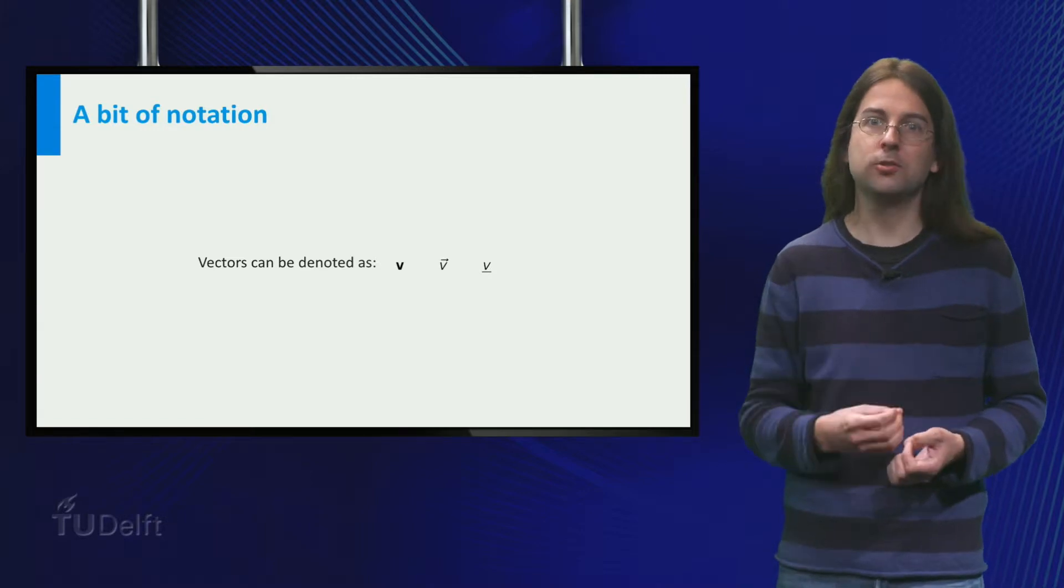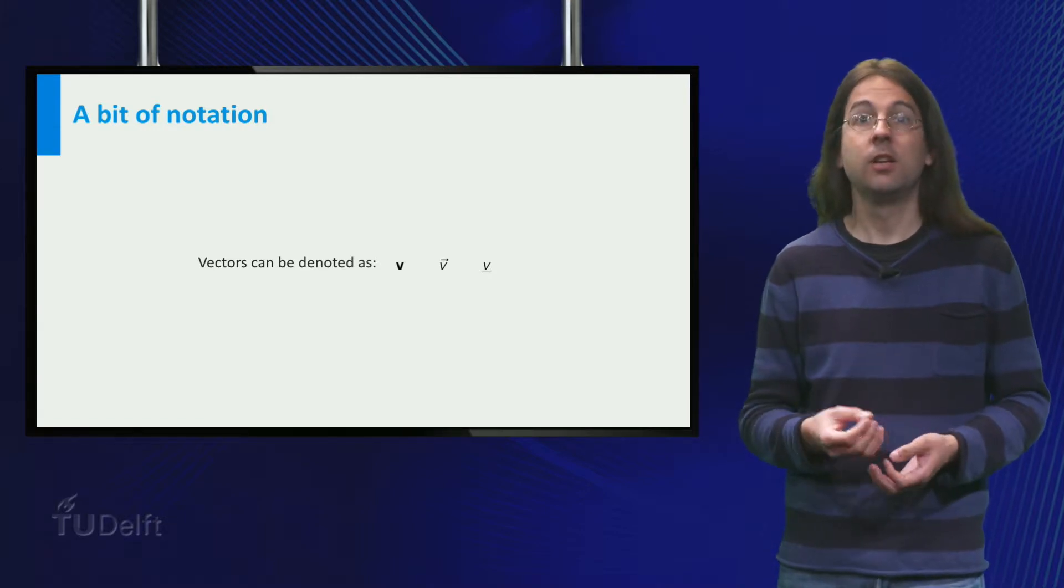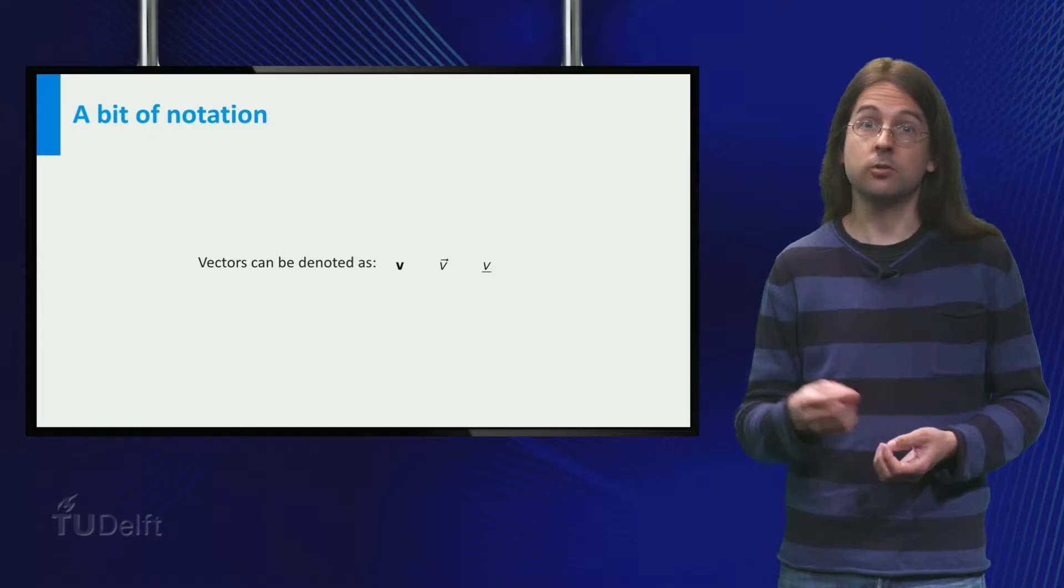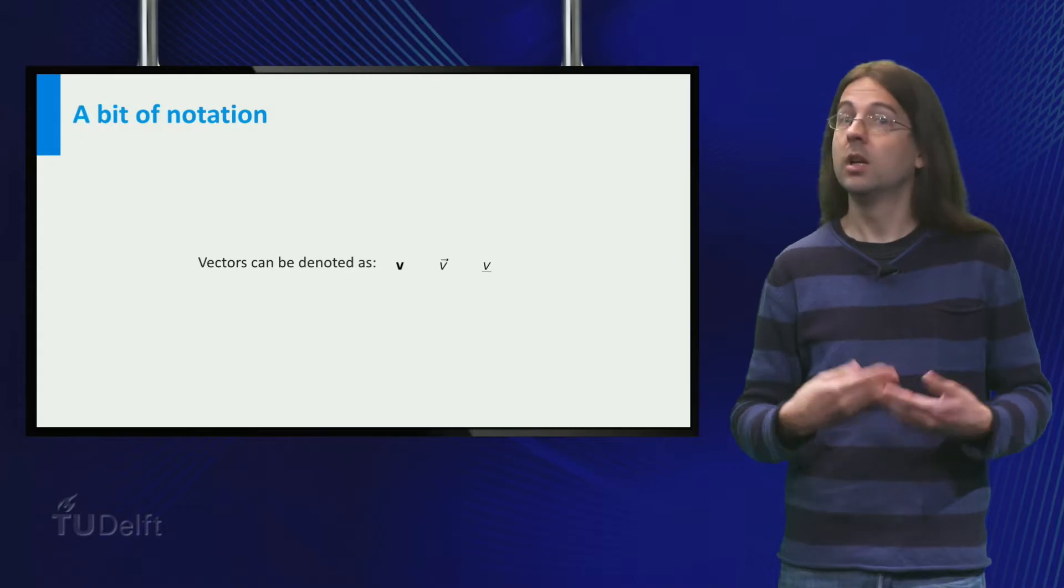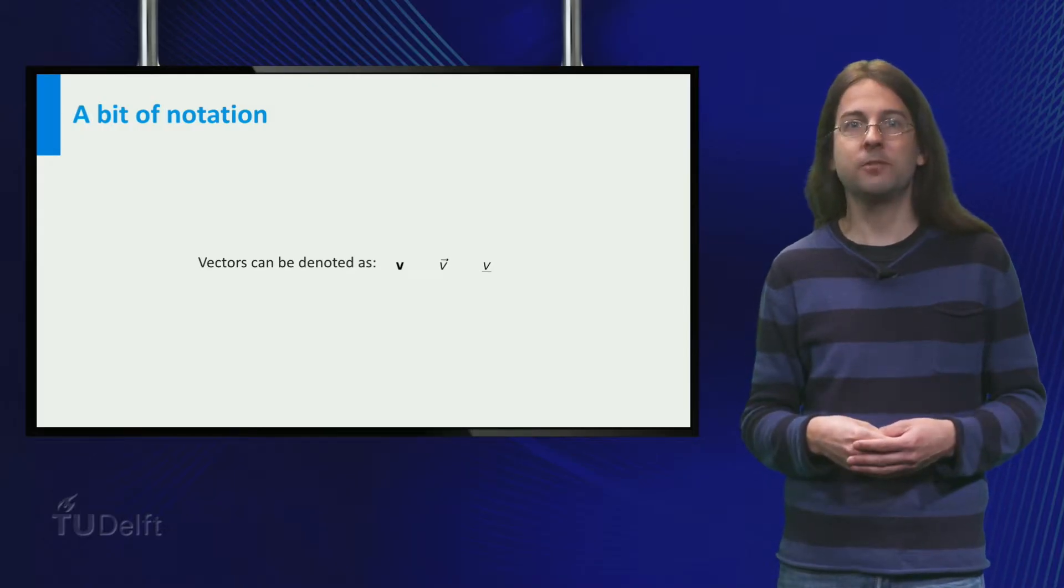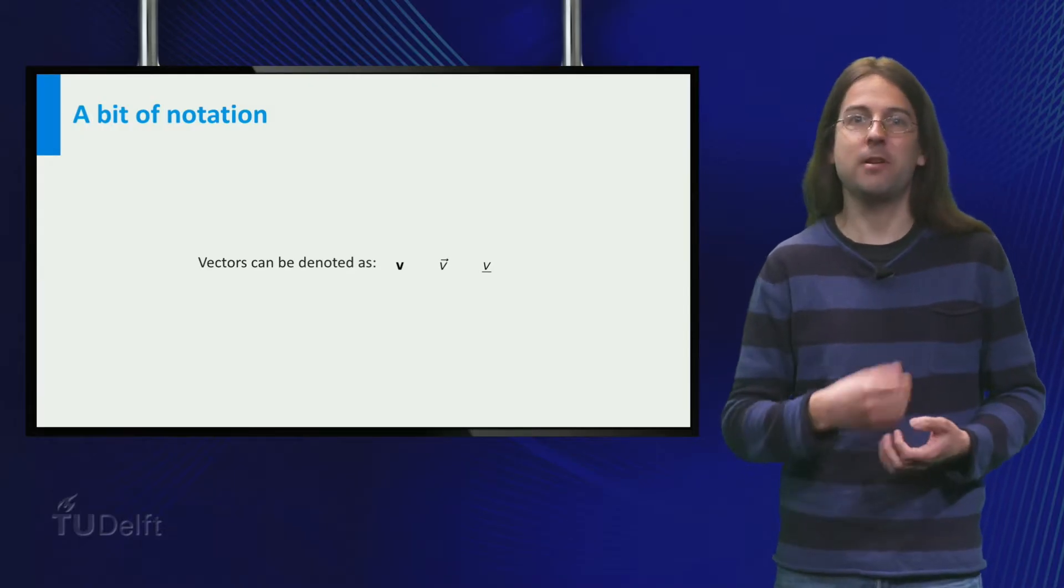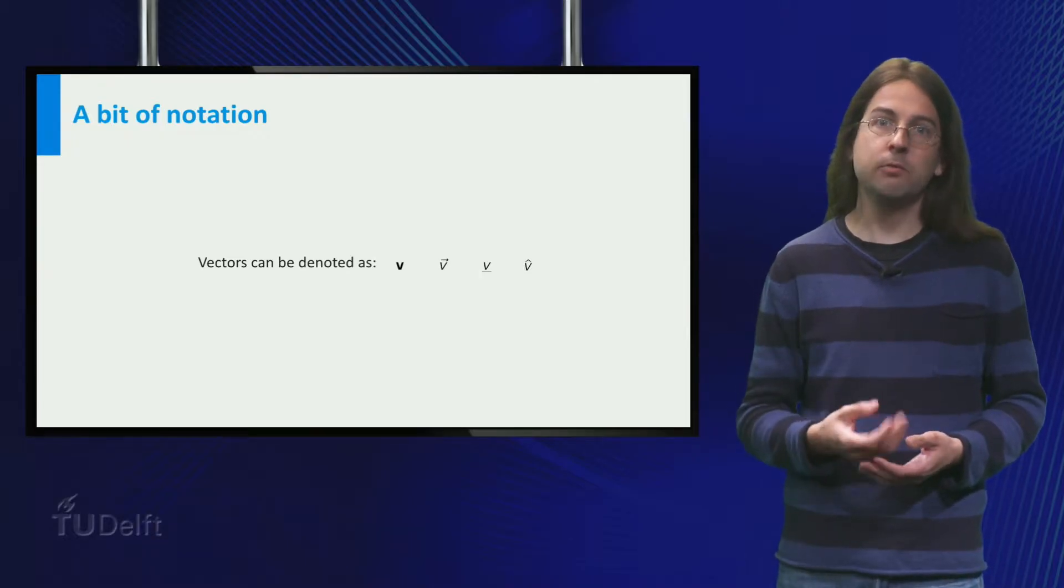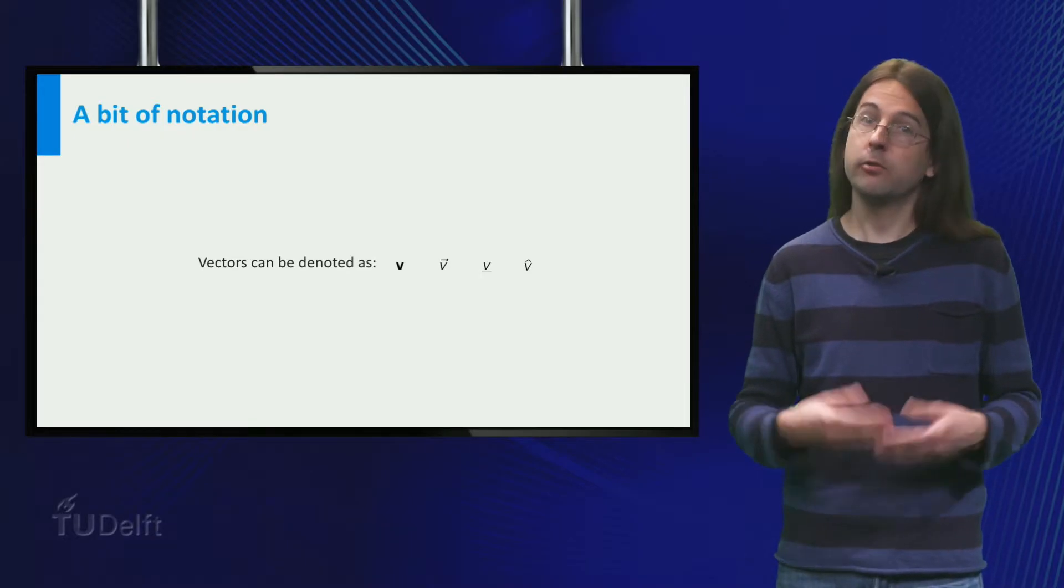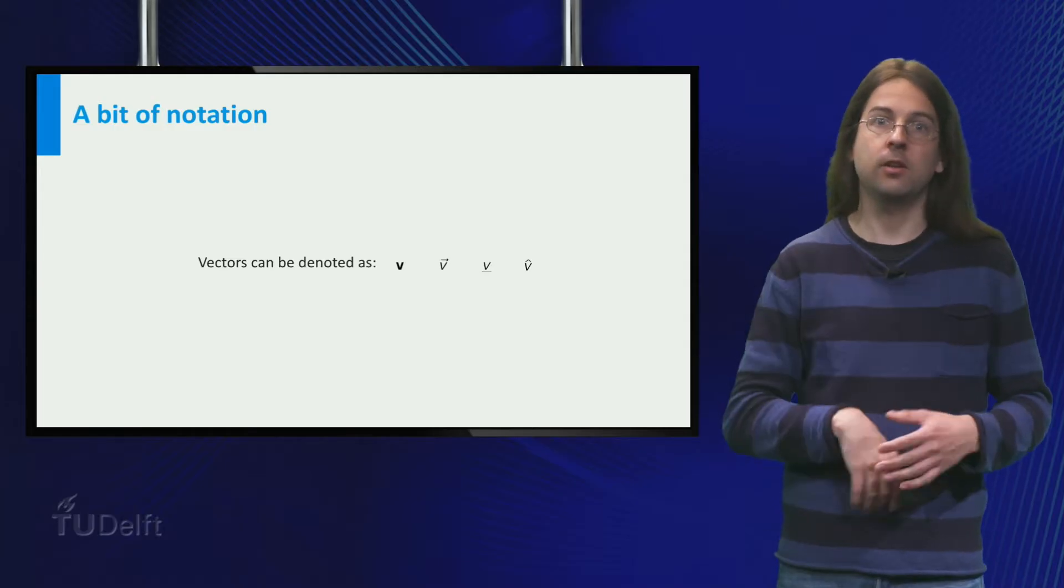But this is really hard to do when writing yourself, so alternative options are to underline vectors or to put a little arrow above a vector. The last one is my personal favorite, as a vector is an arrow after all. For special kinds of vectors even more notations are used, for example by placing a carat on top of the letter.